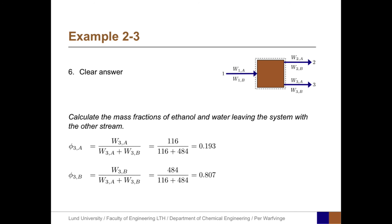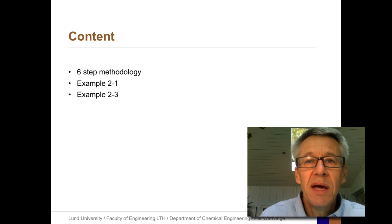Now it's time to give the clear answer. Calculate the mass fractions of ethanol and water leaving the system with the other stream. The mass fraction of A (ethanol) in stream 3 is 0.193, and the mass fraction of B (water) in stream 3 is 0.807. In this screencast, we have applied the six-step methodology and solved Examples 2.1 and 2.3.